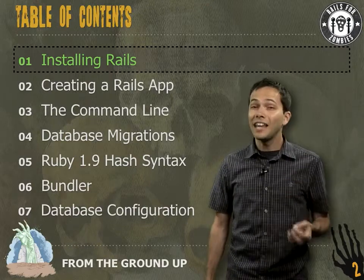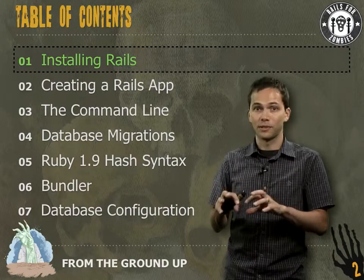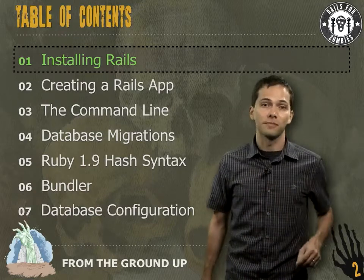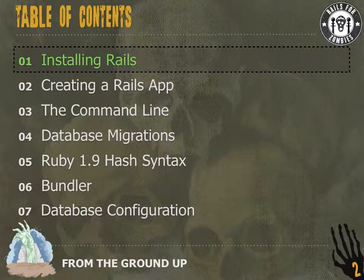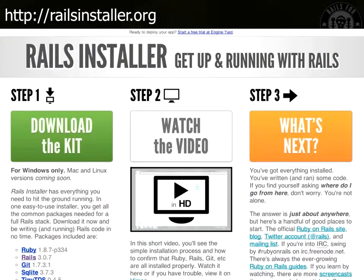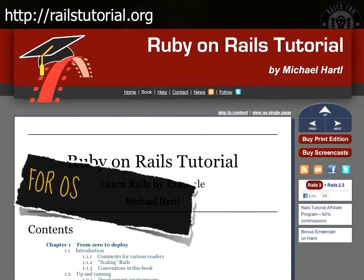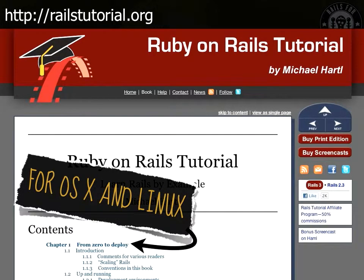If you haven't yet, I highly recommend you get Rails installed on your laptop or computer so that you can run some commands and follow along. If you're on Windows, head over to railsinstaller.org — there's instructions and a downloader, you'll be up and running in no time. If you're running OS X or Linux, I highly recommend going over to railstutorial.org and going through the first chapter. It'll get everything installed, and you'll even get an application deployed on Heroku.